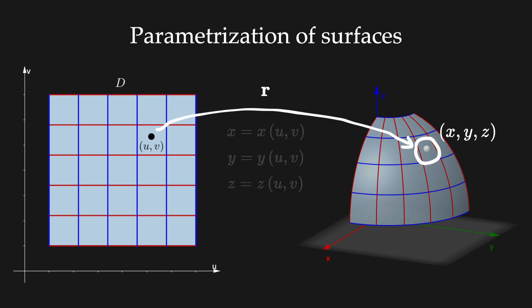We can do this with a function that assigns to every u comma v in the plane a point x y z in the space. Notice that every coordinate x y and z depend on the variables u and v.